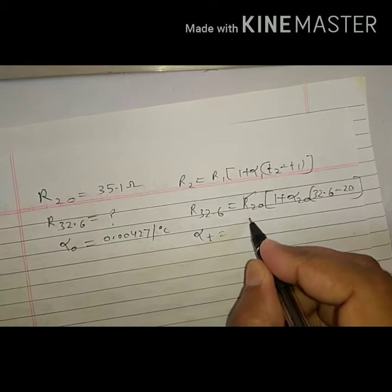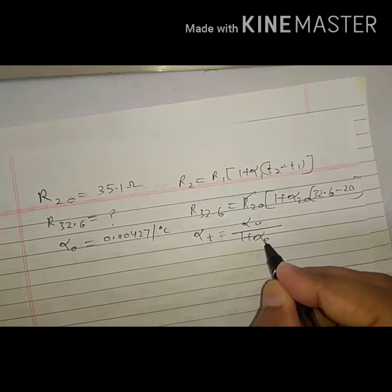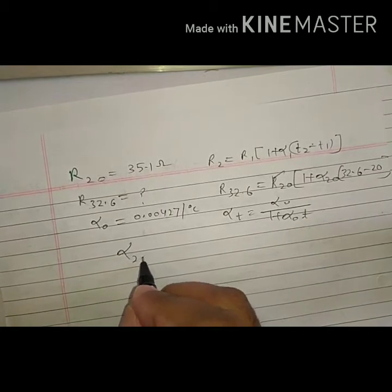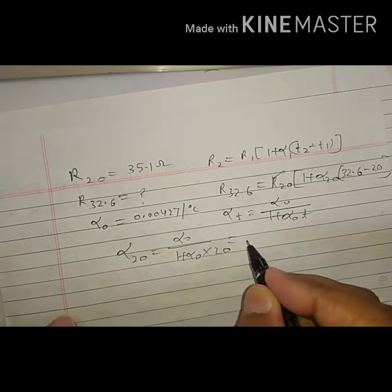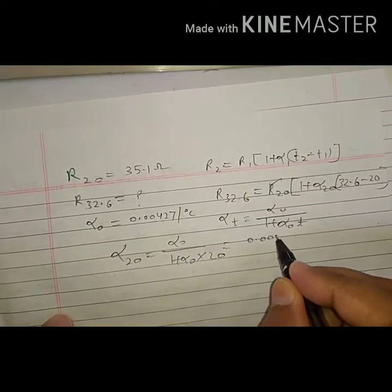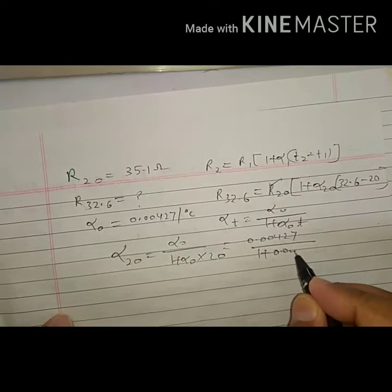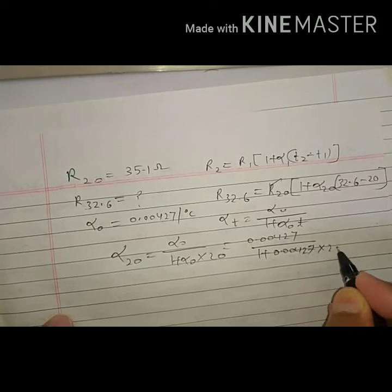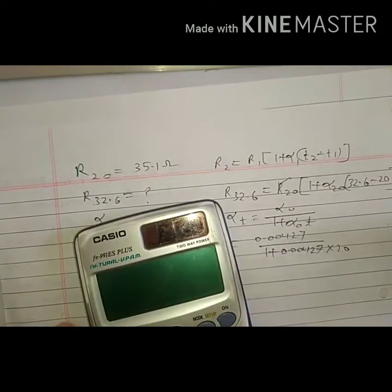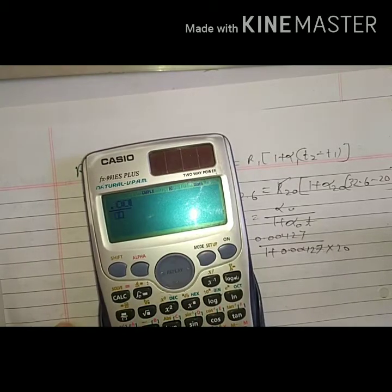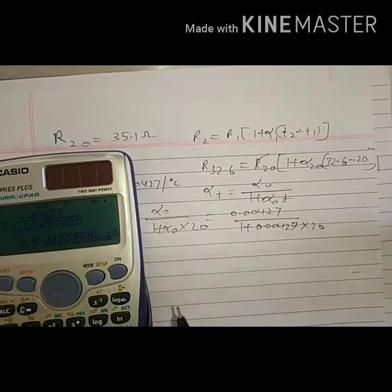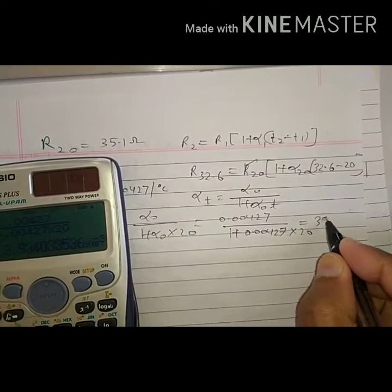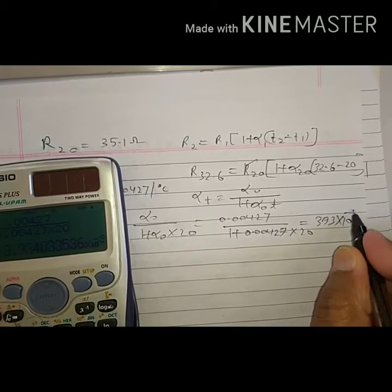We have the formula: αT = α₀ / (1 + α₀ × T). So α₂₀ = α₀ / (1 + α₀ × 20). Putting in the value: α₂₀ = 0.00427 / (1 + 0.00427 × 20), which gives α₂₀ = 3.93 × 10⁻³ per degree Celsius.